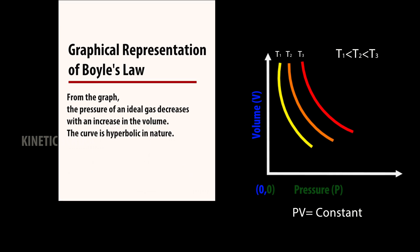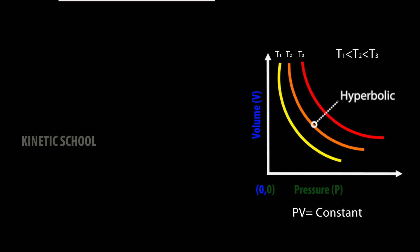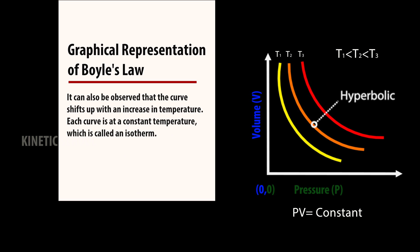From the graph we see that the pressure of an ideal gas decreases with an increase in volume. The curve is hyperbolic in nature. It can also be observed that the curve shifts up with an increase in temperature. Each curve is at a constant temperature, which is called an isotherm.